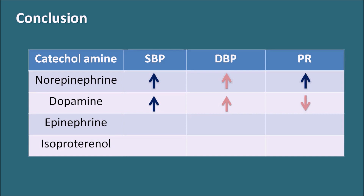Epinephrine, having both alpha and beta receptor actions, increases systolic blood pressure at a moderate level, slightly decreases diastolic blood pressure, and slightly reduces peripheral resistance due to beta receptor activity. Isoproterenol, being more selective toward beta receptors, has little effect on systolic blood pressure but produces a marked decrease in diastolic blood pressure, and significantly reduces peripheral resistance.